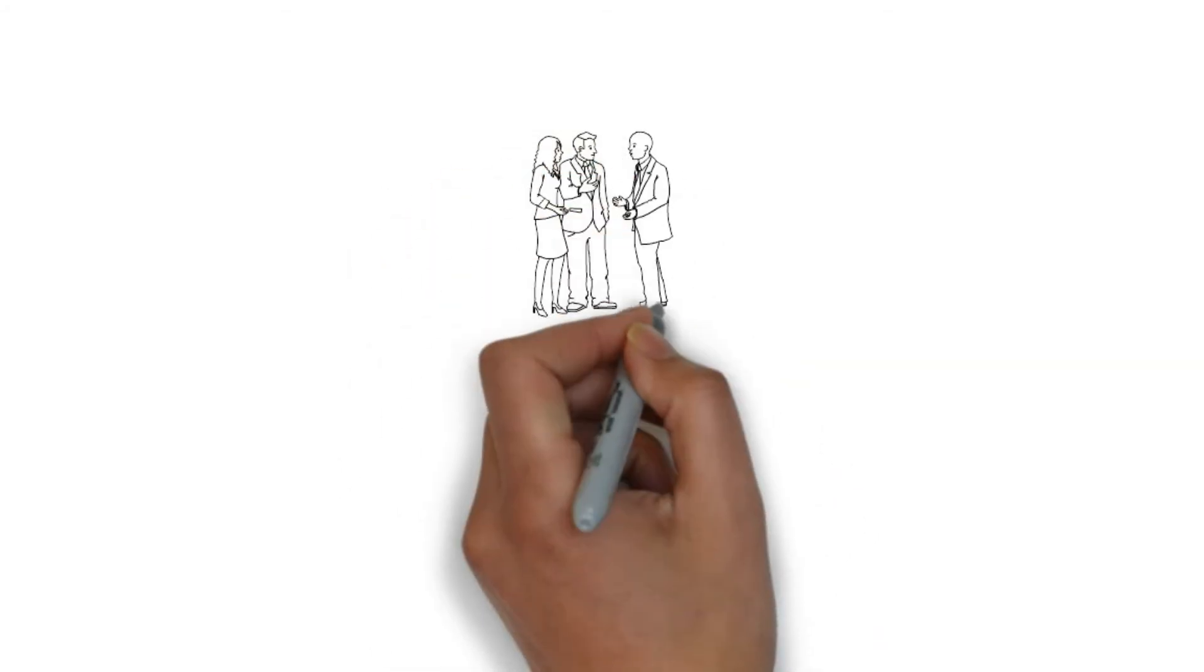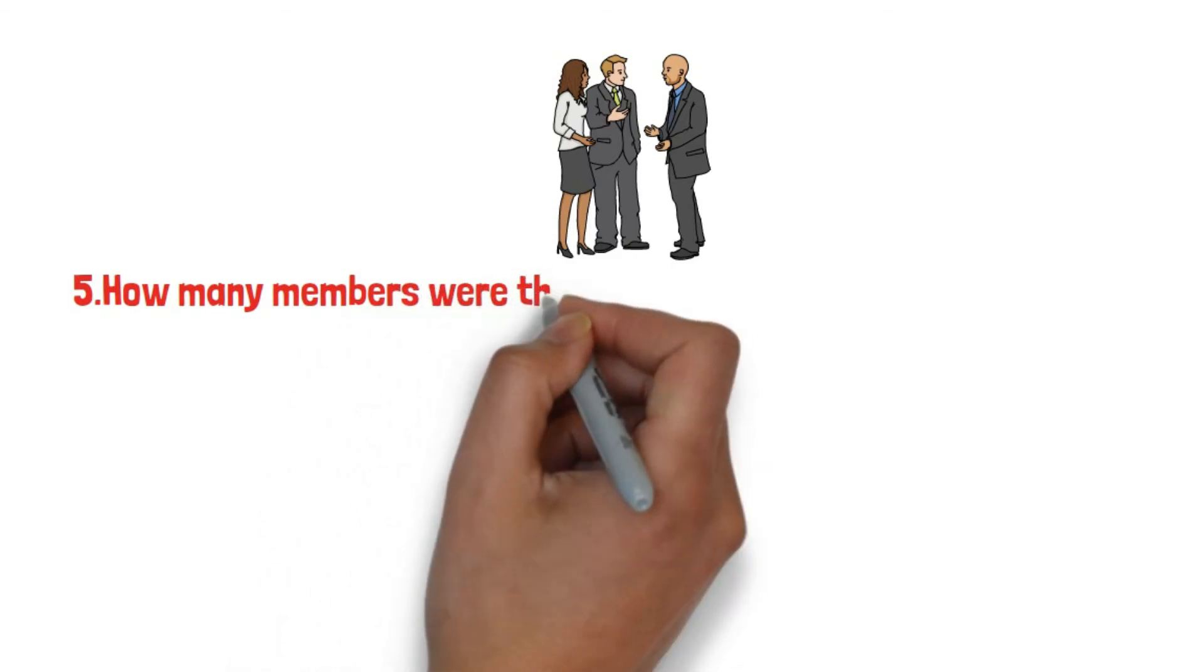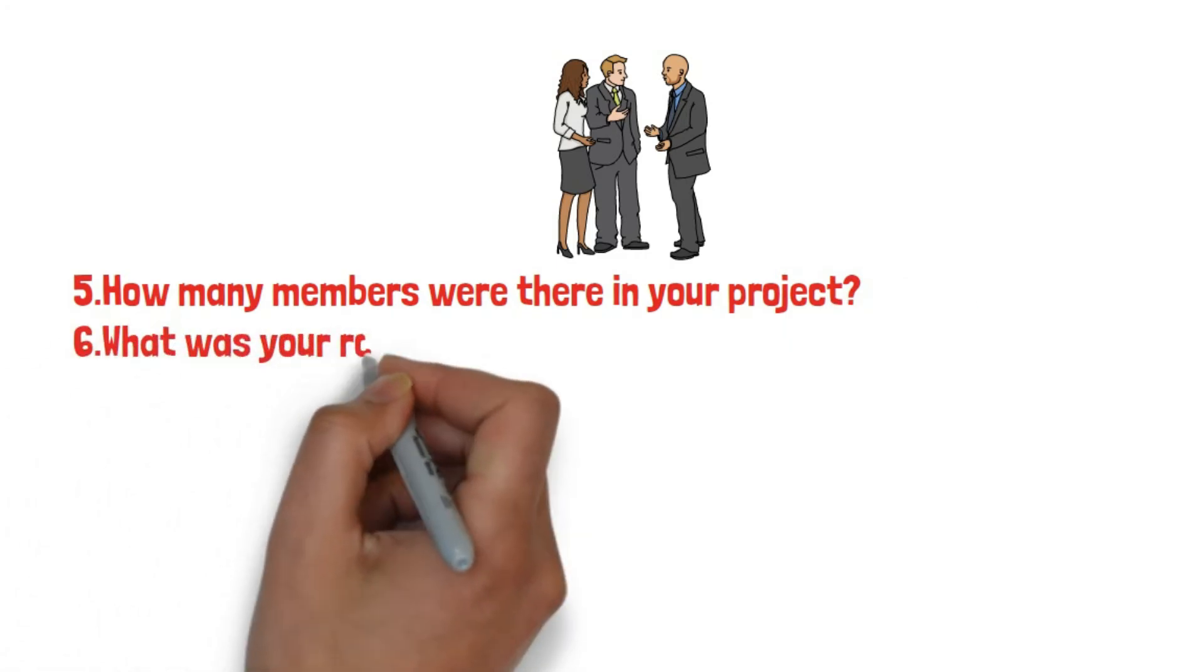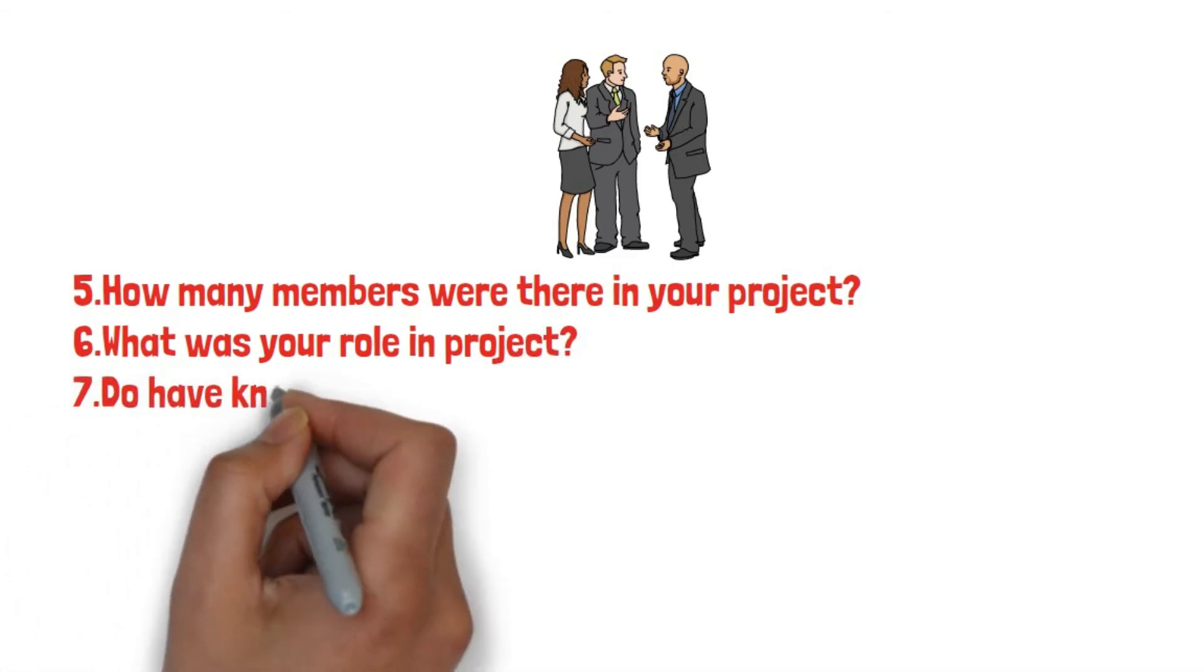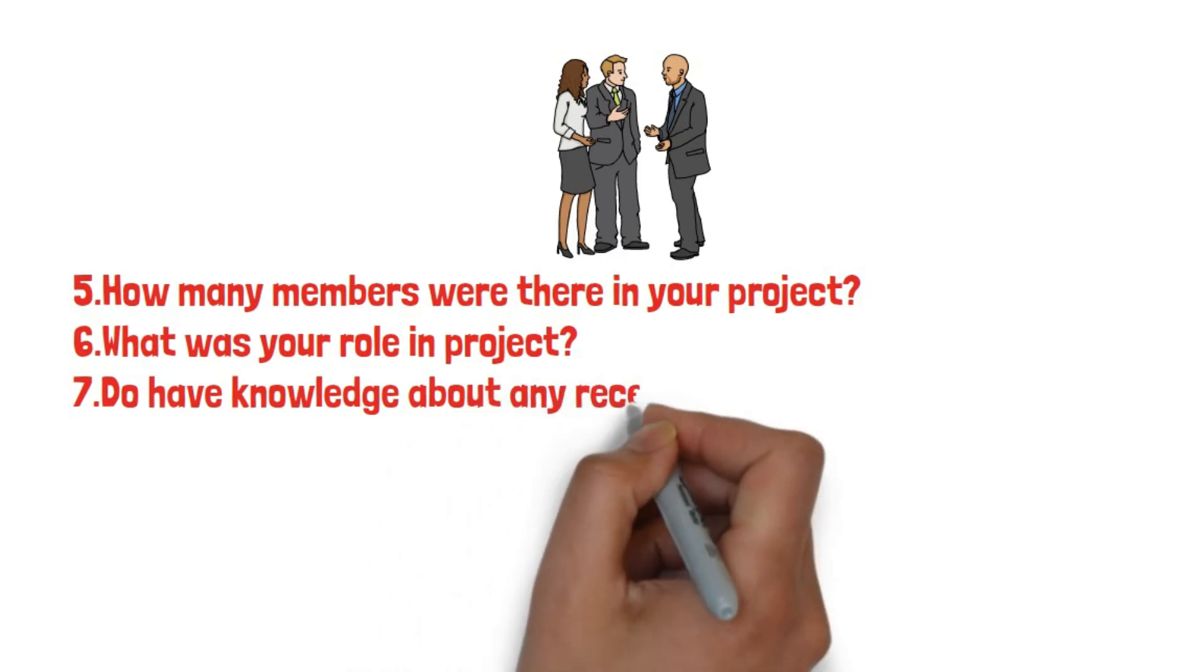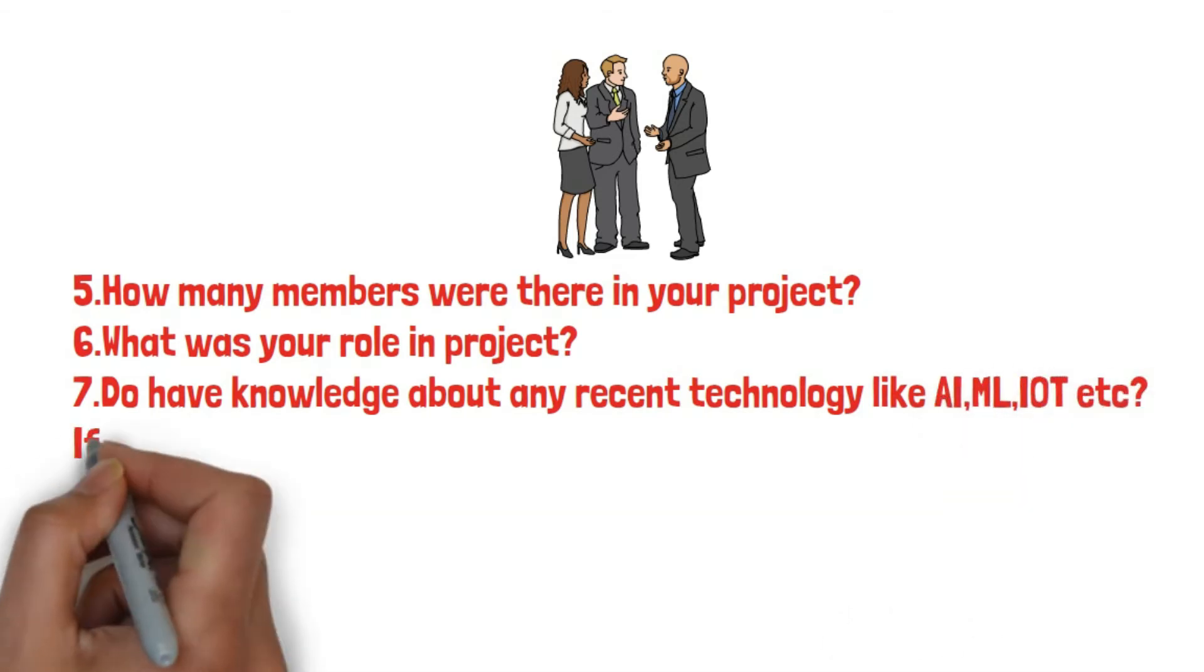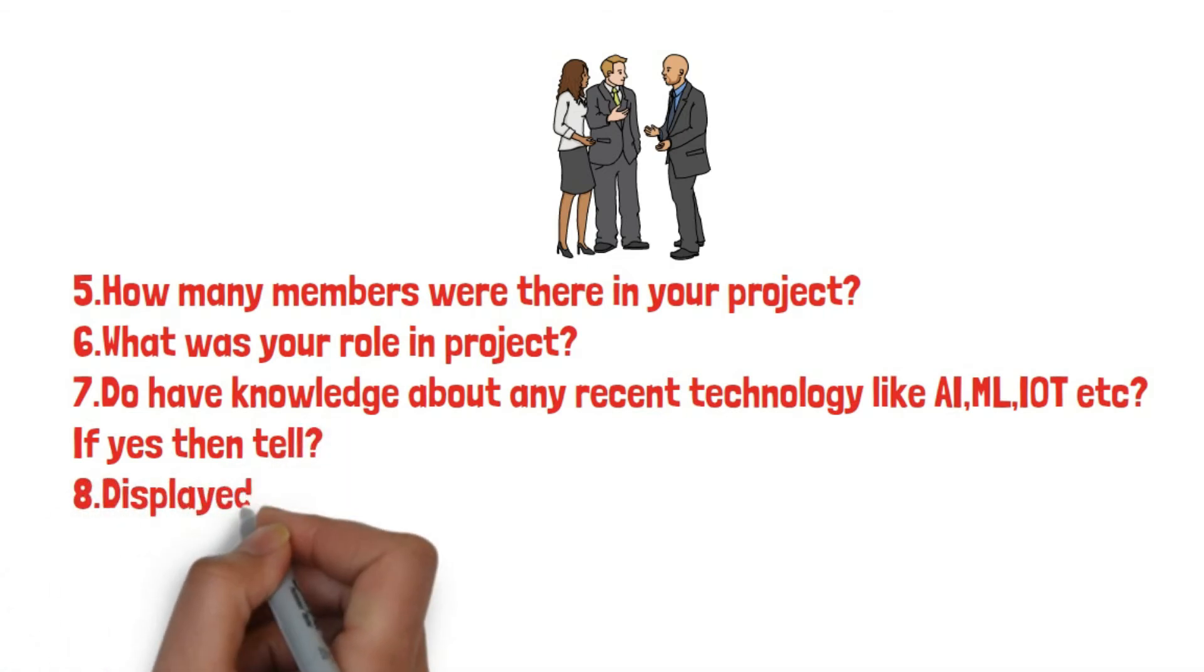Fifth question was, how many members were there in your project? He said he had five members. Then the sixth question, what was your role in project? He explained his role. The seventh question was, do you have any knowledge about any recent technology like AI, ML, IoT, etc., and if yes, then tell. If you have any knowledge about recent technology, then you must tell.